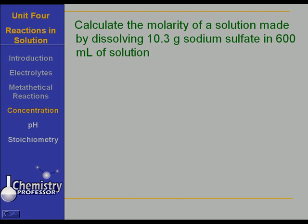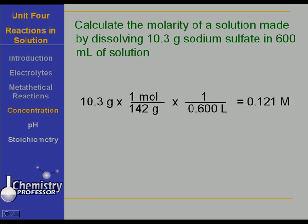Calculate the molarity of a solution made by dissolving 10.3 grams of sodium sulfate in 600 milliliters of solution. Another way of saying that would be in enough water to make 600 milliliters of solution. We take 10.3 grams times one mole over 142 grams. Did you remember that the formula for sodium sulfate is Na2SO4? Times one over 0.6 liter gives us 0.121 moles per liter, or 0.121 molar.